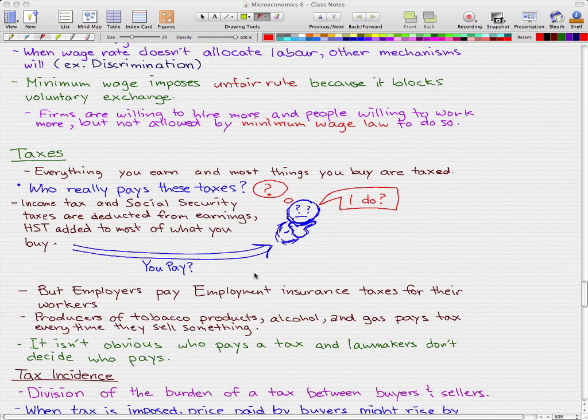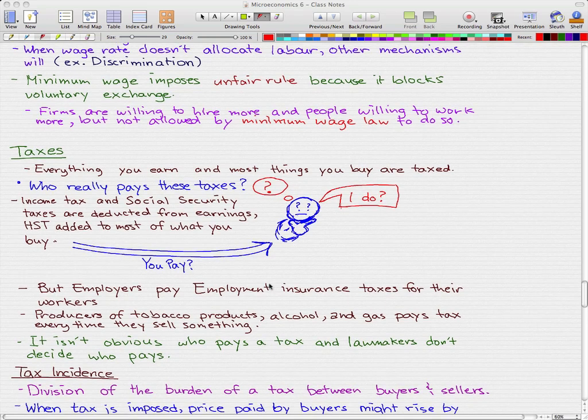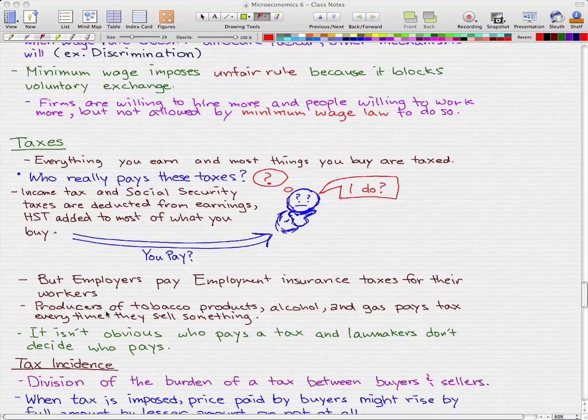But employers pay employment insurance taxes for their workers. Producers of tobacco products, alcohol, and gasoline pay taxes every time they sell something. So it really isn't obvious who pays the tax, and lawmakers don't decide who pays.